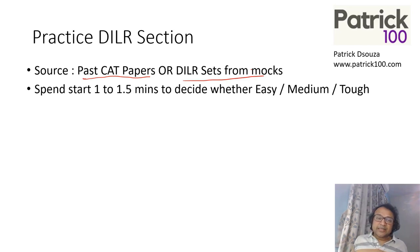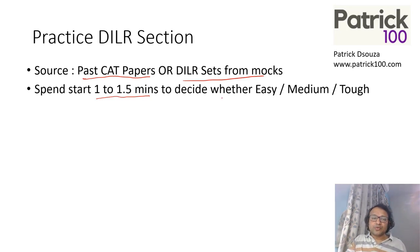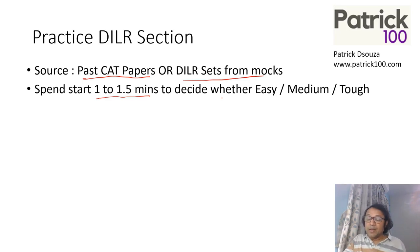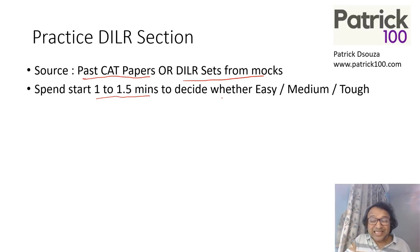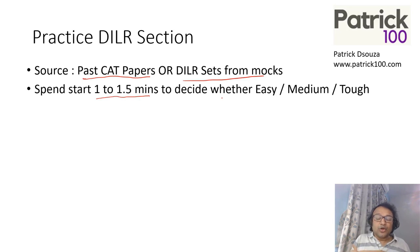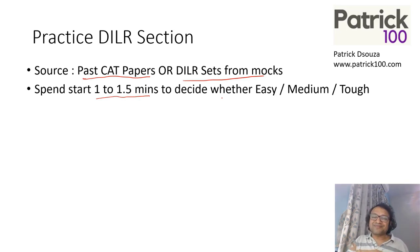When you start practicing a DLR set, spend at least one to 1.5 minutes at the start just to decide whether a set is easy, medium, or tough. Take a set, read it for one minute or 1.5 minutes, and mark it — this set looks easy, or this set looks medium. This is what you will do in mocks and in the exam. You'll spend approximately one minute to decide whether a set is tough, easy, or medium, and you should be able to do this.